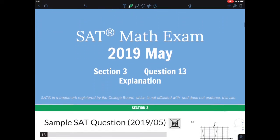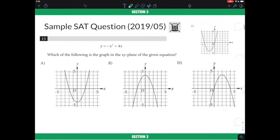That's a math portion. So in this question, we are given a quadratic equation, y equals negative x squared plus 4x. So it requires you to pick a graph out of the four choices here.